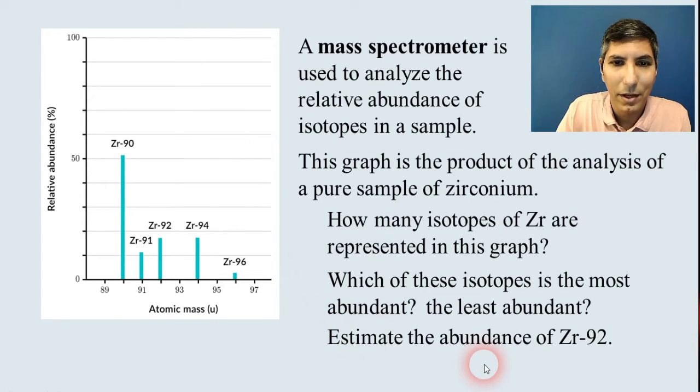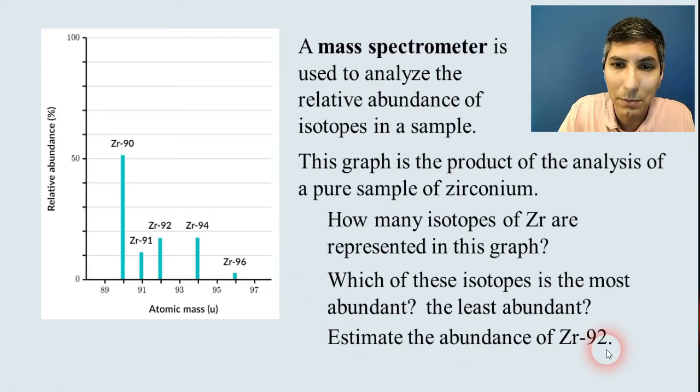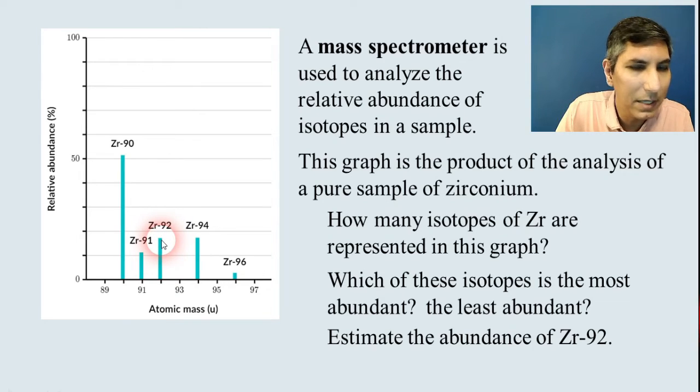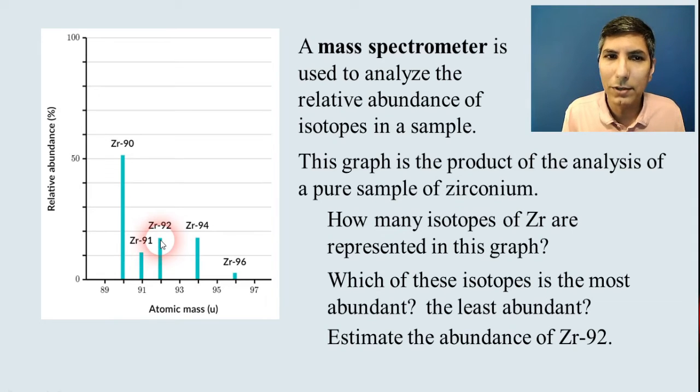Something like maybe 2% or 3% would be there. If it says, estimate the abundance of one of these isotopes. Well, zirconium-92. Now, zirconium-92 would have to be right here. It's labeled. It's also right at the 92 mark there. What is the abundance? Well, it's between 10 and 20. It looks like it would be about maybe 17, 18%. So, you should be able to answer questions like this by looking at a mass spectrometer graph.